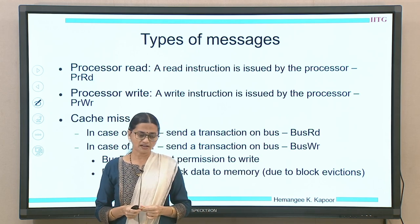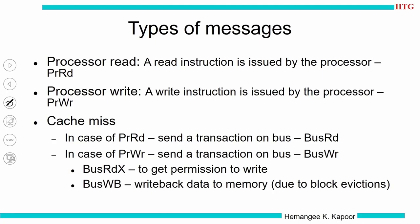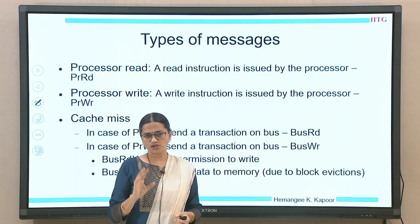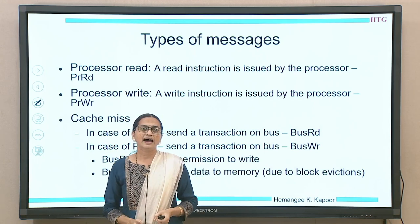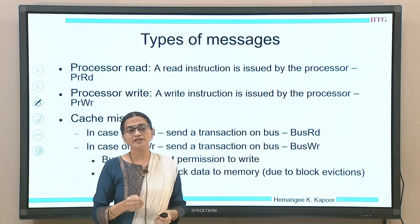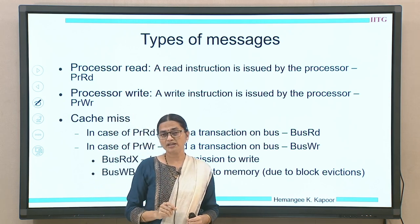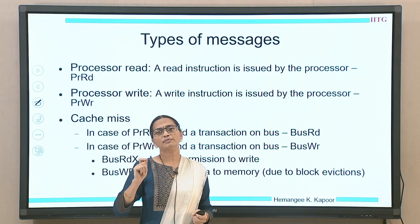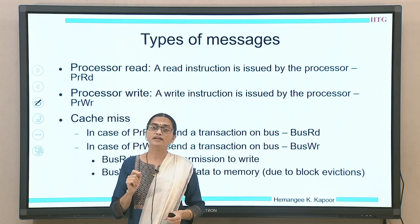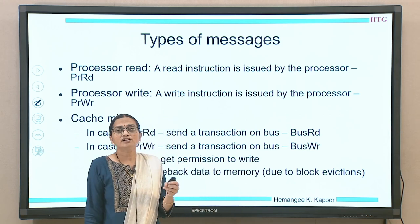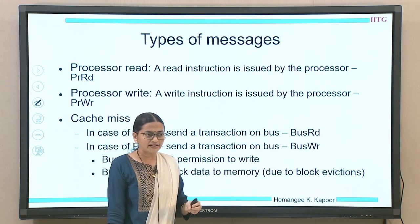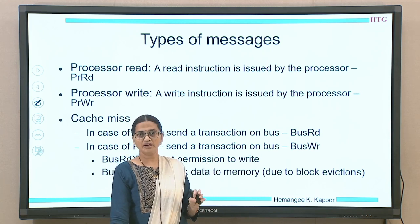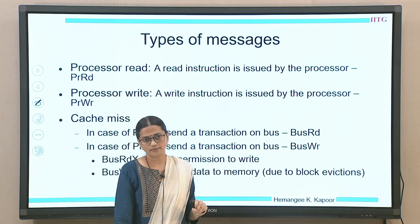The types of messages are very similar to VI from the processor side — nothing changes. We normally have a processor read and processor write. If it is a cache hit, no problem. But if it is a cache miss on a read, the snoop controller sends a bus read transaction. In case of a write request where the block is absent, we need to go out and bring the block either from memory or from another cache that may have modified it.